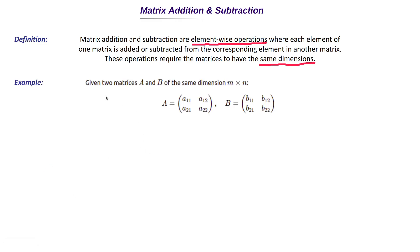Let's understand this with an example. We have two matrices A and B of the same dimension M×N, where M is the number of rows and N is the number of columns. In this case M=2 and N=2, so these are 2×2 matrices with two rows and two columns. The first element is A11 — first row, first column — and A12 is first row, second column. A22 is second row, second column.